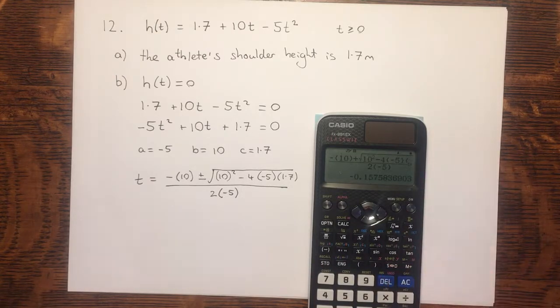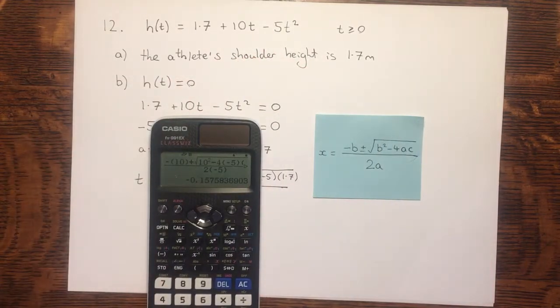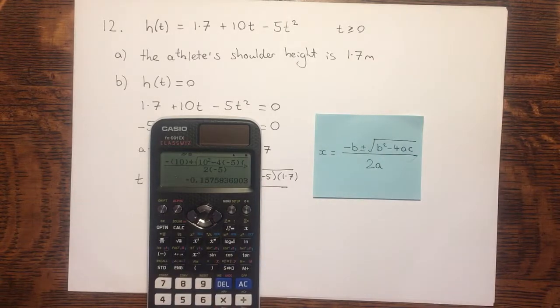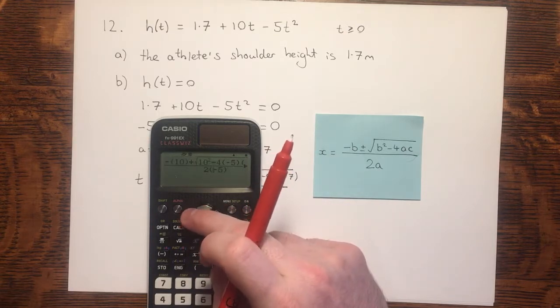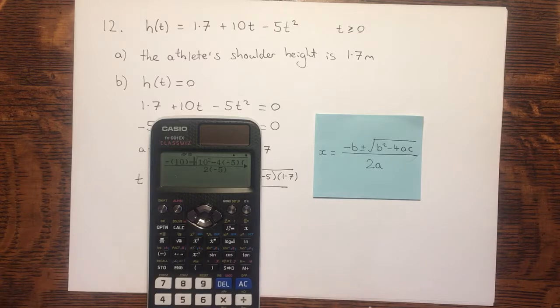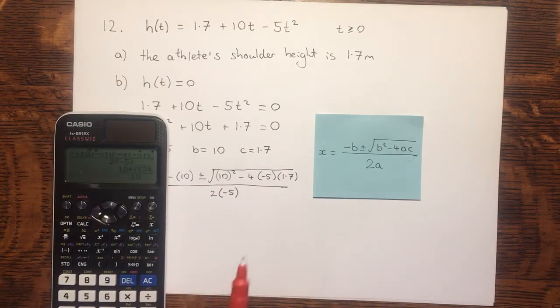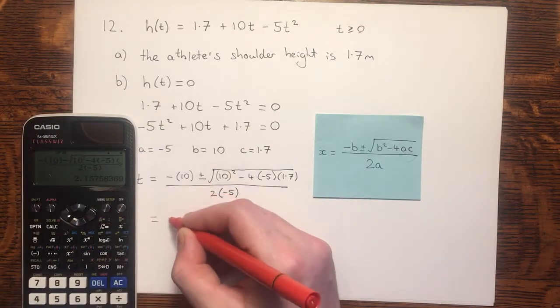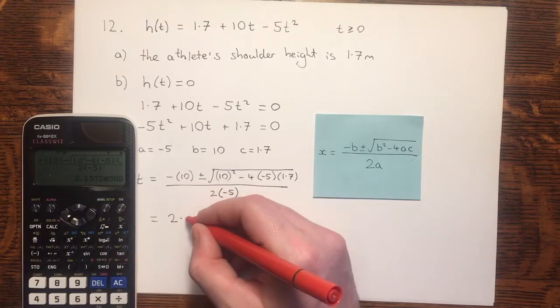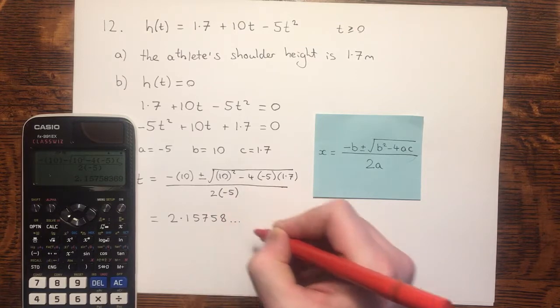This is given as a third, and changing it up, I've got a negative value. Remember, time is only going to be positive. So actually, I'm not even going to write that value down. I'm going to go back up, and I'm going to change my equation, and put the negative sign in, because it's plus or minus. Another third, changing it up, and I get a value of 2.15758, etc. seconds.